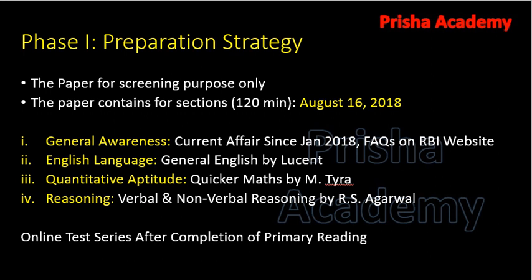For quantitative aptitude, I suggest you buy Quicker Maths by M. Tyra. In that book you will find very good fast tricks and quick tricks for mathematics. For reasoning, I suggest you buy Verbal and Non-Verbal Reasoning by R.S. Aggarwal, which is also very helpful for new people.